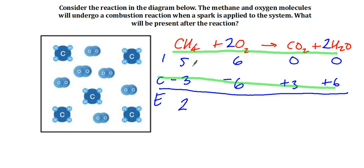So at the end, there will still be 2 methane molecules remaining, no oxygen, 3 carbon dioxide produced, and 6 waters produced. And so that's an example of using ICE tables and particle representations.